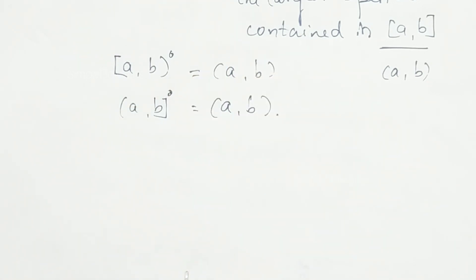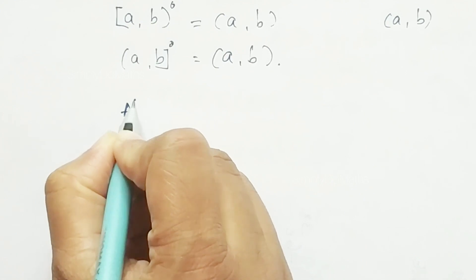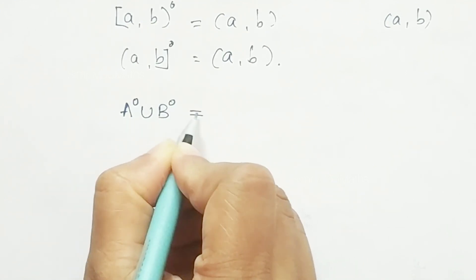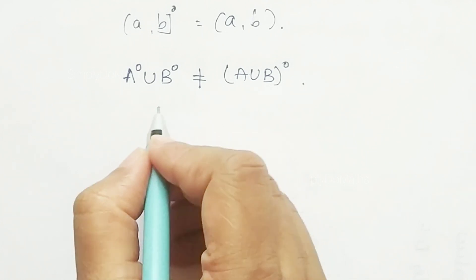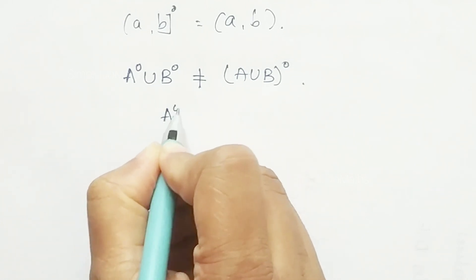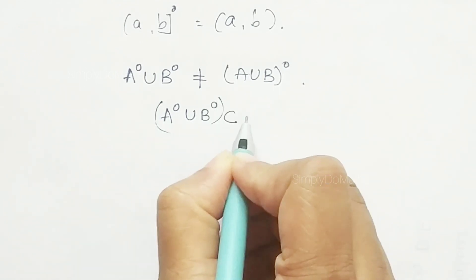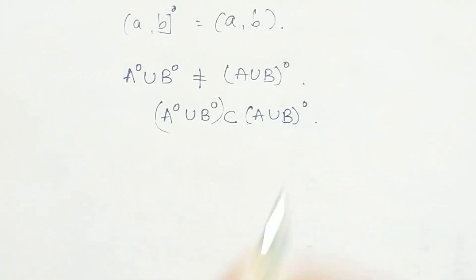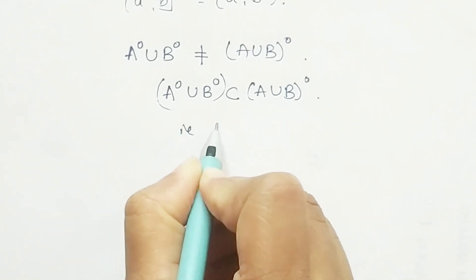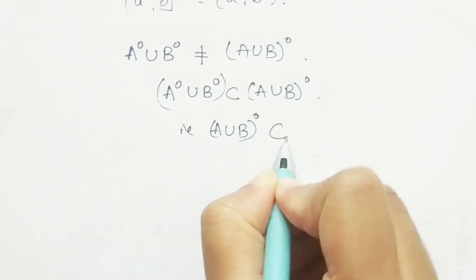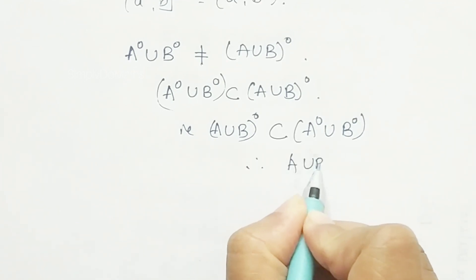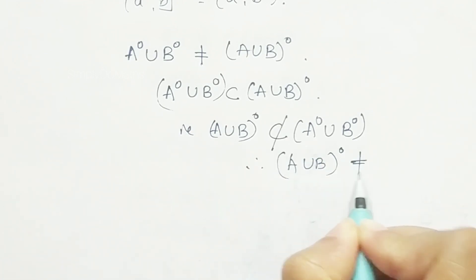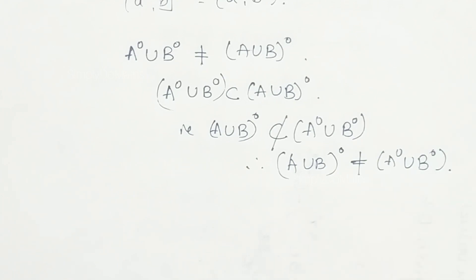Using this property we can conclude that the interior of A union the interior of B is not equal to the interior of (A union B). In our previous video we studied that Int(A) ∪ Int(B) is a subset of Int(A ∪ B), but the reverse is not true in general. That is, Int(A ∪ B) is not necessarily a subset of Int(A) ∪ Int(B), so Int(A ∪ B) ≠ Int(A) ∪ Int(B) in general.